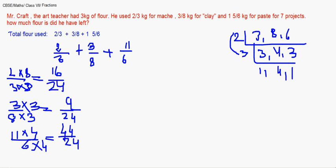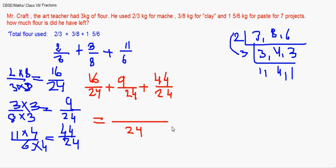So we will be adding 16 by 24 plus 9 by 24 plus 44 by 24. If you add all these numerators, I think 16 plus 9 is 25, and then 44 is giving me 69. This many have been used.